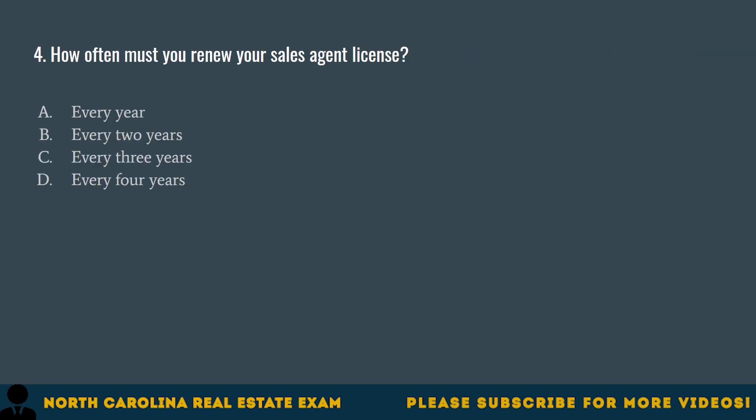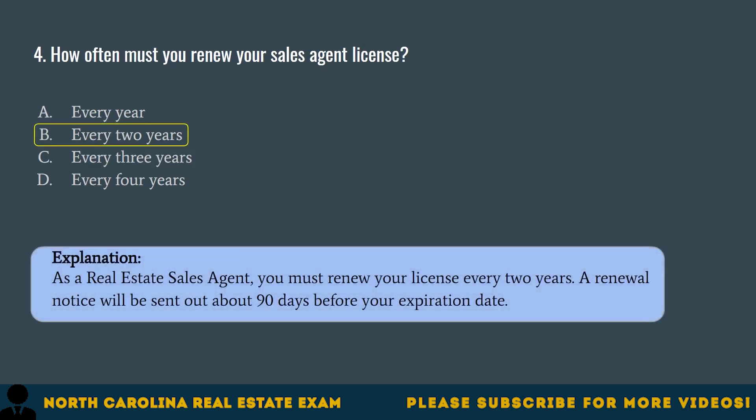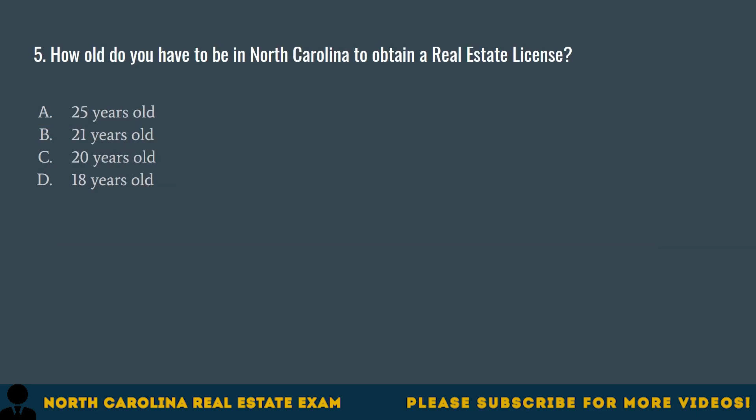Question 4. How often must you renew your sales agent license? A. Every year. B. Every 2 years. C. Every 3 years. D. Every 4 years. The correct answer is B. Every 2 years. As a real estate sales agent, you must renew your license every 2 years. A renewal notice will be sent out about 90 days before your expiration date.